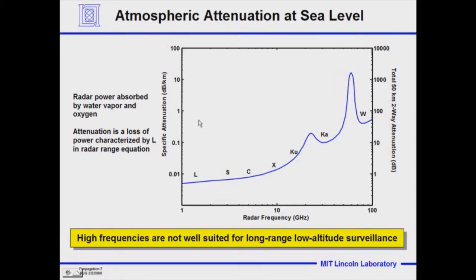When we build radars out to hundreds of miles, this attenuation factor can be huge if you're operating at higher frequencies, but minuscule if you're dealing with a hundredth of a dB per kilometer — in 10 miles it's only a tenth of a dB and the signal would drop by a very, very small amount.